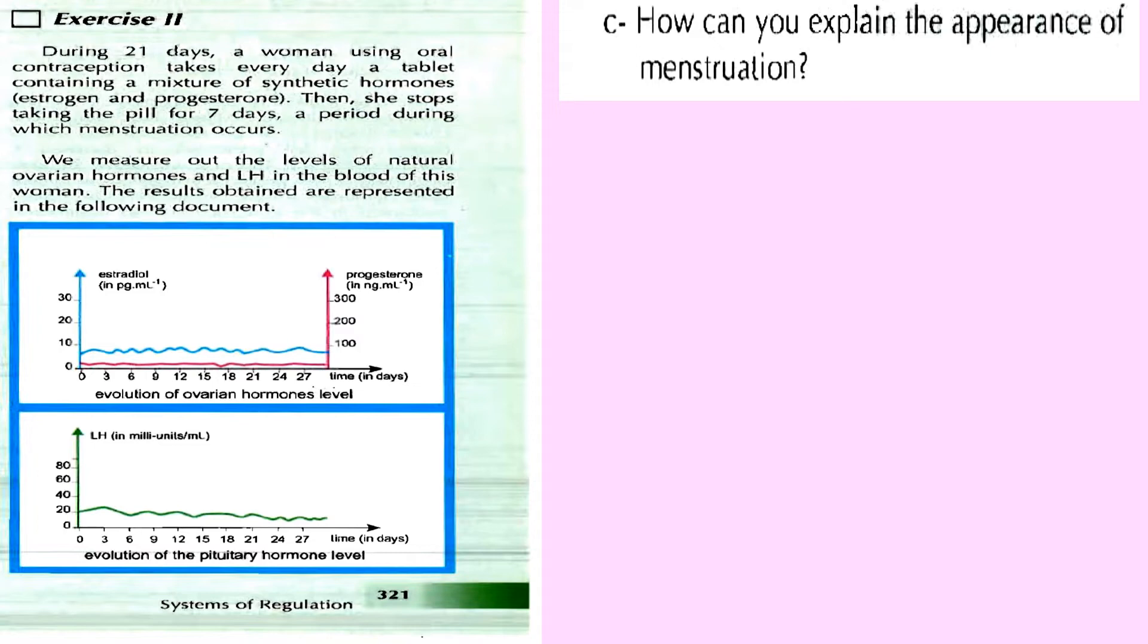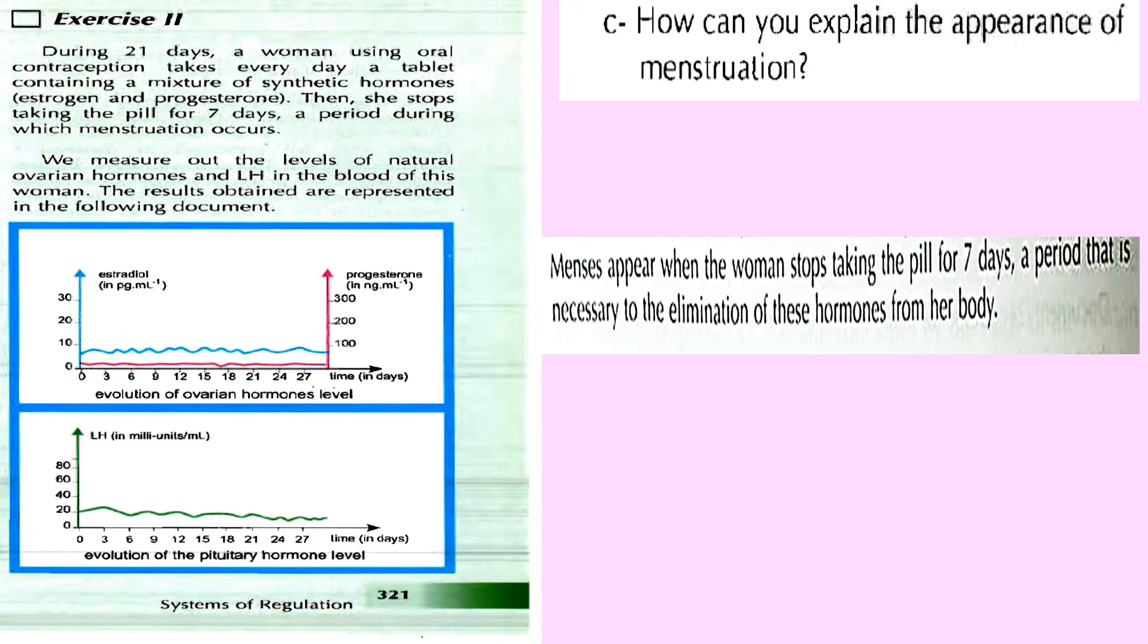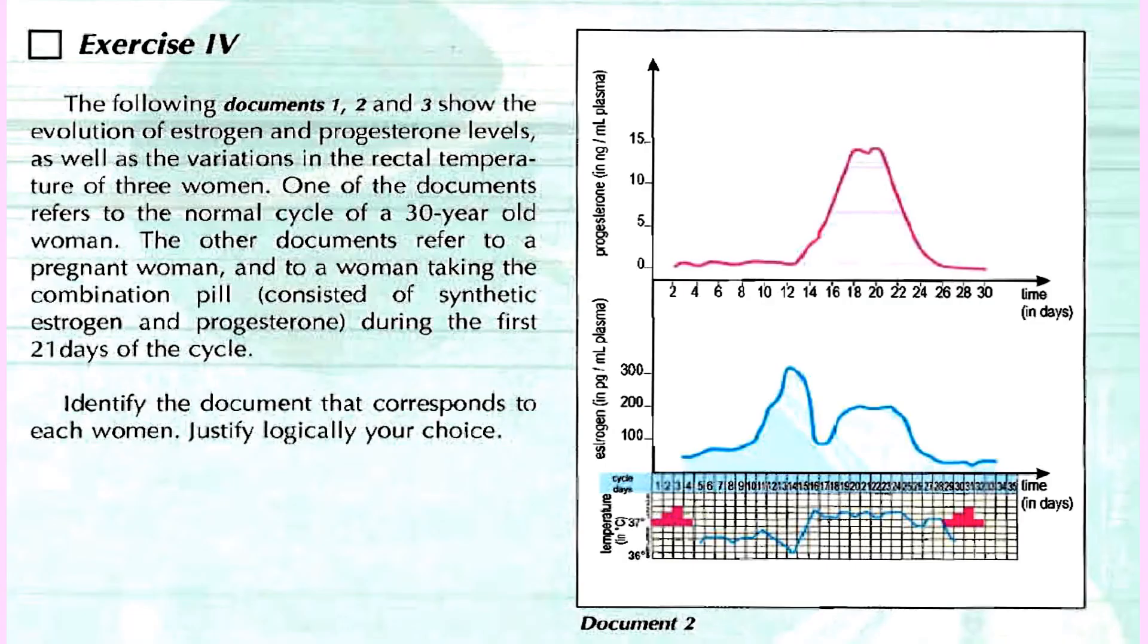Finally, how can you explain the appearance of menstruation? This part is similar to the part hypothesis by probing the documents at the beginning of this video we solved. Why does menses occur after seven days from the 21 days when she took the pill? She takes the pill for 21 days, stops for seven days, and then menses must occur because the hormones estrogen and progesterone that were in the system start decreasing little by little until finally the level is null or nil, so menses occurs. Menses appear when the woman stops taking the pill for seven days. This period of seven days is necessary for the elimination of these hormones from her body.